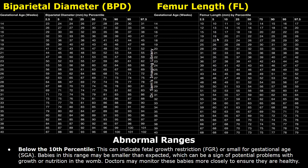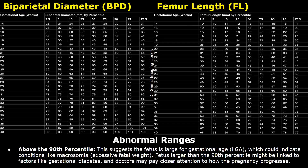Values below the 10th percentile can indicate intrauterine growth restriction. Measurements that exceed the 90th percentile are usually considered large for gestational age. The values in the 95th and 97.5th percentiles are considered larger than normal, and large values may indicate conditions such as macrosomia, which is excessive fetal weight.